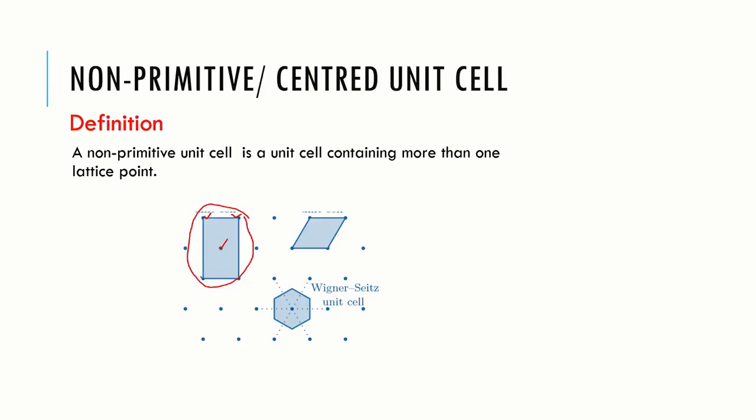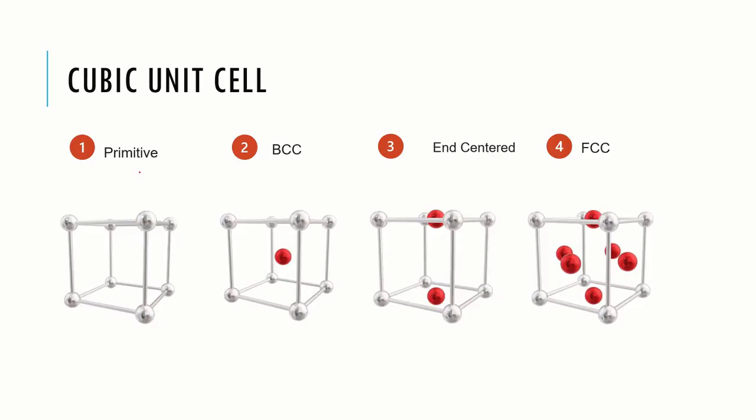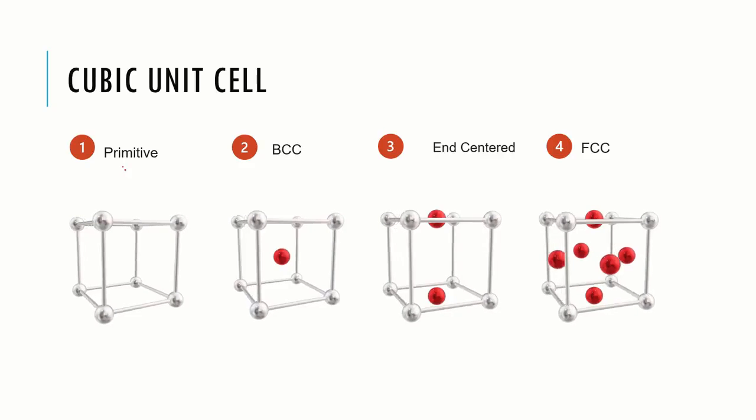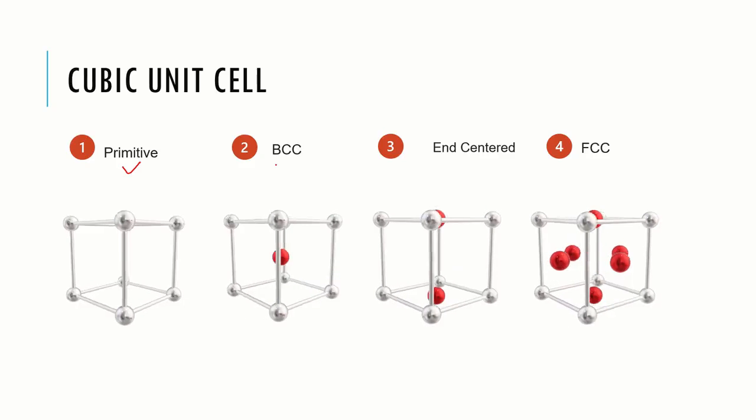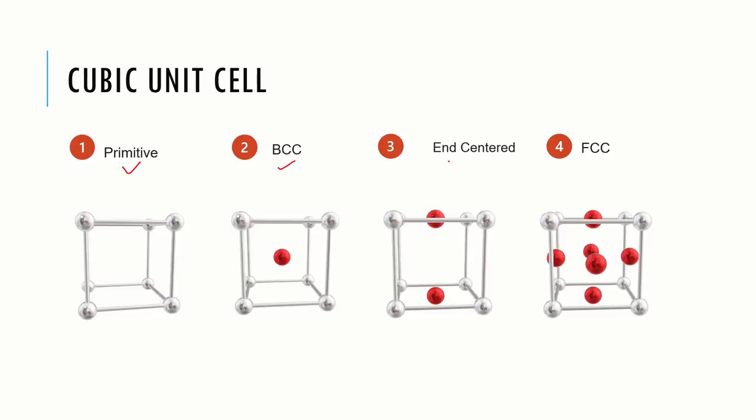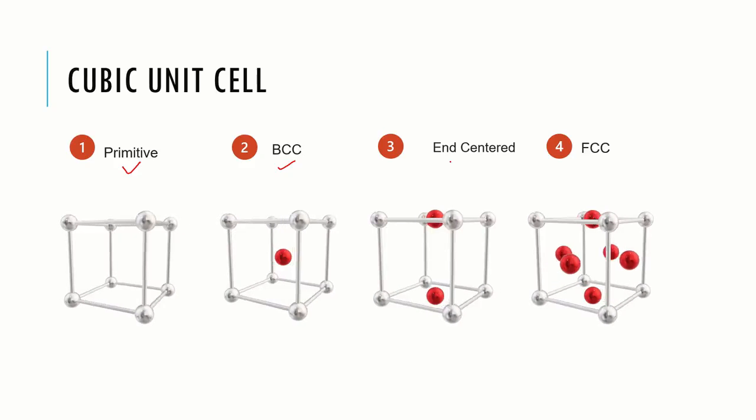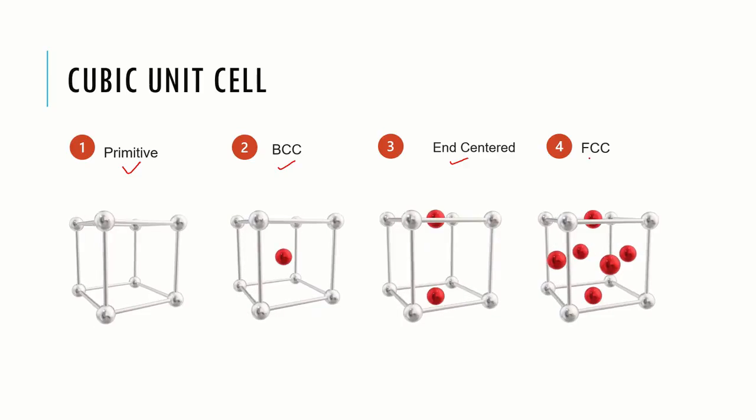Sometimes it is useful to define a unit cell which is not primitive in order to make it simpler to work with. A non-primitive unit cell is a unit cell containing more than one lattice point. For example, here this is a non-primitive unit cell. It contains one lattice point at each of its corners and one lattice point at its center. A cubic unit cell is the unit cell in which metric lengths are equal. It can be primitive, body centered, end centered, or face centered containing six additional points, one at each of its faces.